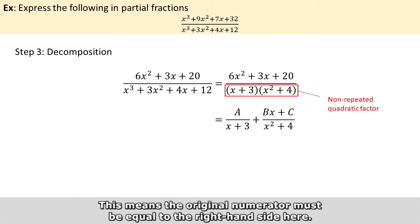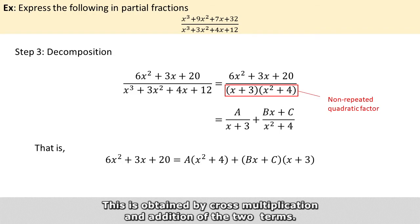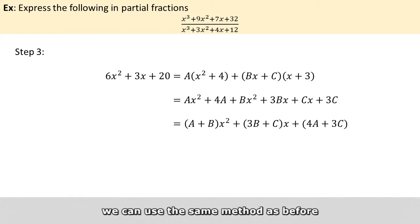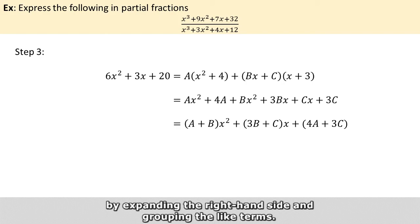So this means that the original numerator must be equal to what we have on the right hand side of this equation. This is obtained by cross multiplication and addition of the two terms. In order to solve for A, B, and C, we can use the same method as before by expanding the right hand side and then grouping all the same terms.